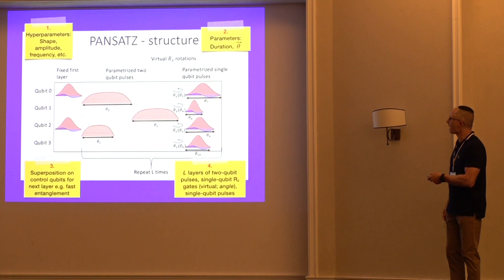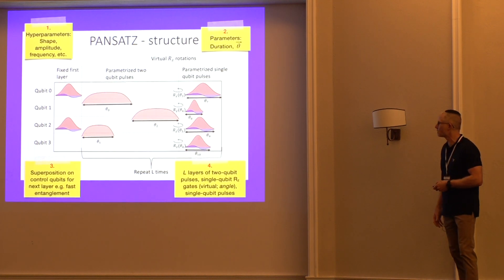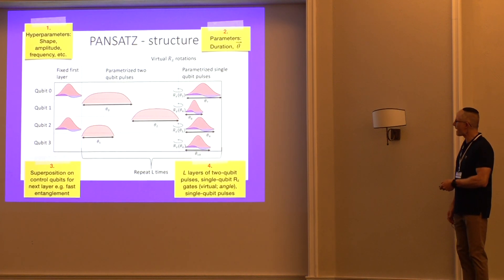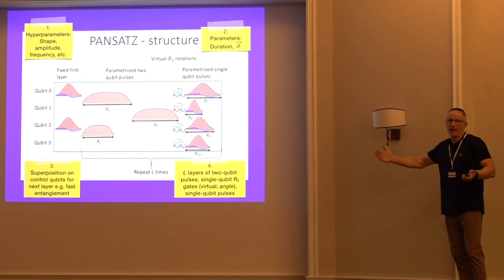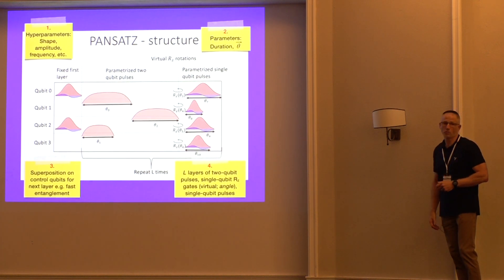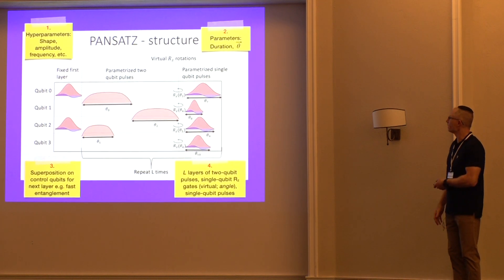This is designed to give us fast entanglement for the qubits. And then we have a repeated series of L layers, as many as you would like, which feature two-qubit pulses, as well as single qubit RZ gates, which are virtual gates. So those are parameterized by their angle, their zero duration. And then finally, a layer of single qubit pulses applied to all the qubits. So this is the structure of the pansatz that Dekel came up with as a part of his research.